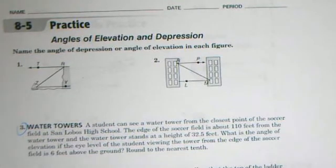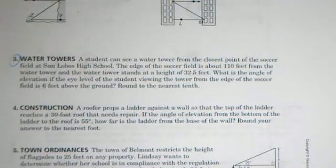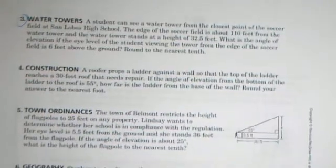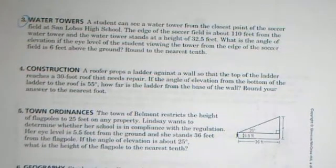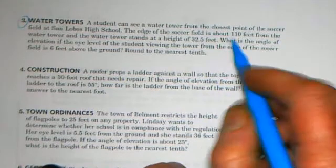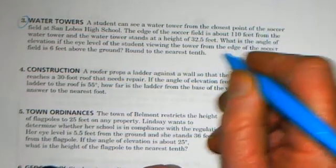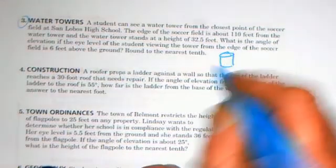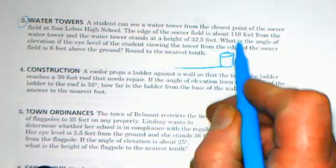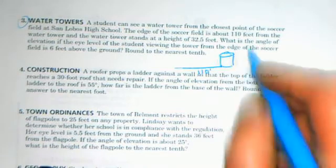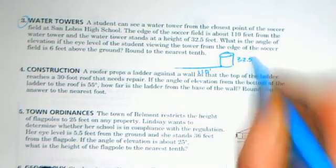So if you look at number three, a student can see a water tower from the closest point of the soccer field. The edge of the soccer field is 110 feet from the tower. The tower is 32 and a half feet high and his eye level is six feet up off the ground. So let's draw a diagram to represent this. You've got the water tower. The soccer field is 110 feet away. The tower is 32 and a half feet tall.